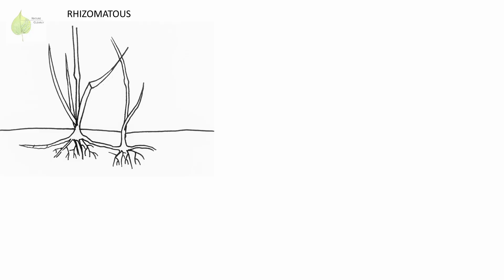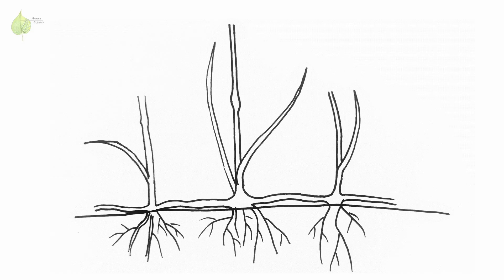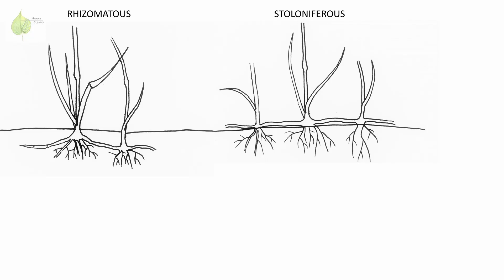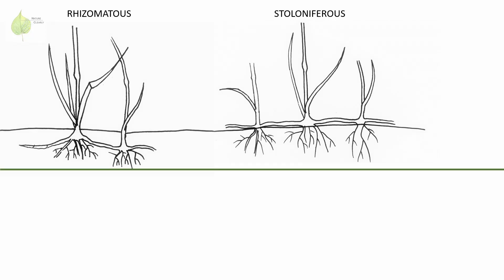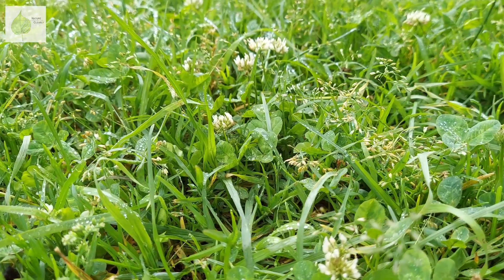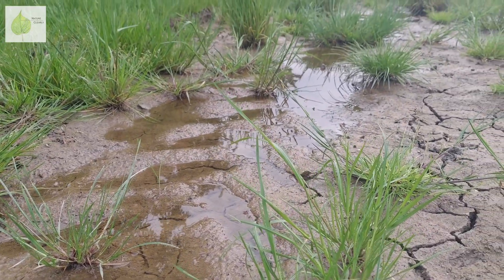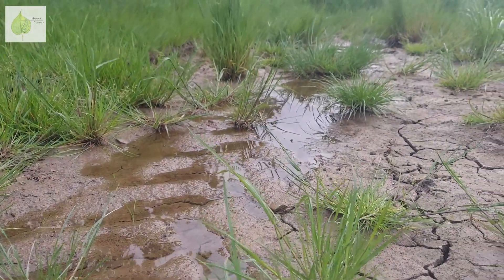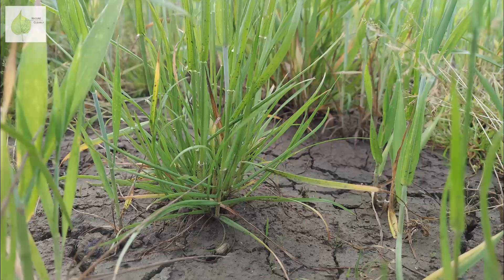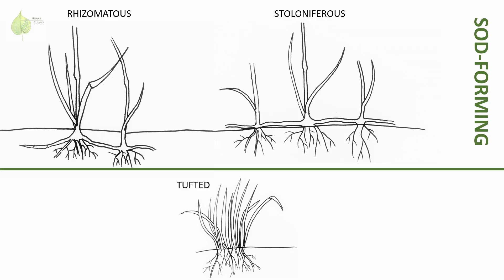Grasses with rhizomes are referred to as rhizomatous. When the stems spread horizontally above the ground, we refer to them as stolons, and grasses with such structures are stoloniferous. Both stoloniferous and rhizomatous grasses are said to be sod-forming, meaning they spread laterally, often creating dense mats or colonies. Not all grasses have this lateral growth, of course. Grasses might be tufted, creating clumps or bunches — these are referred to as bunch grasses, and they don't produce any stolons or rhizomes.